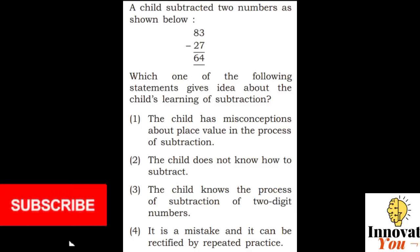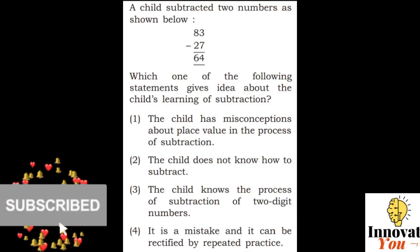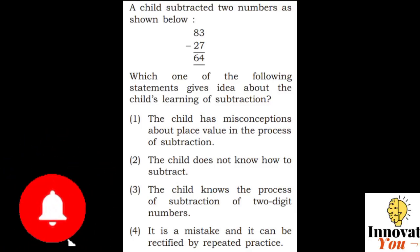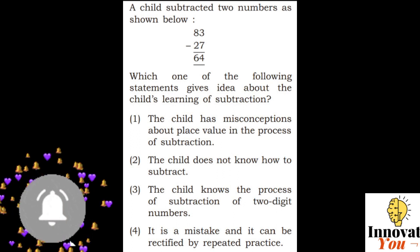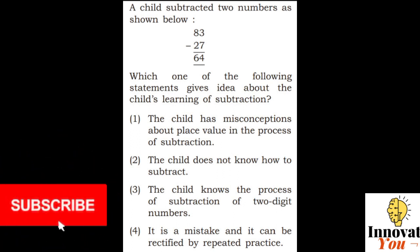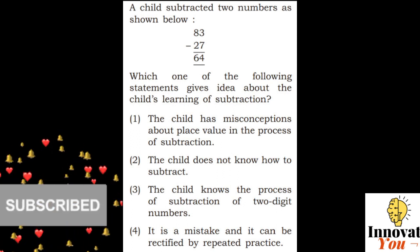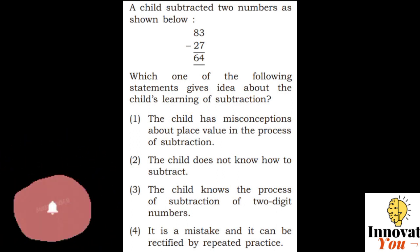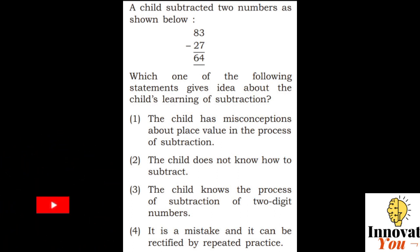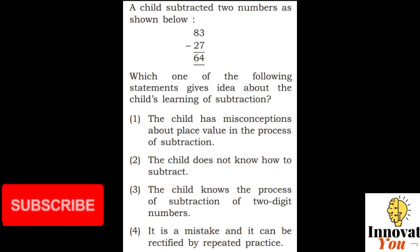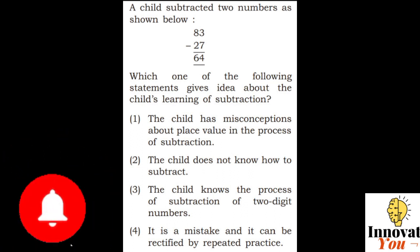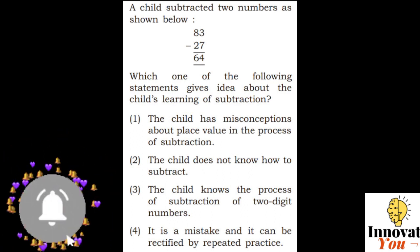Question 1. A child subtracted two numbers as shown below: 83 minus 27 gives 64. Which one of the following statements gives an idea about the child's learning of subtraction?